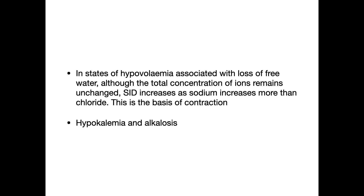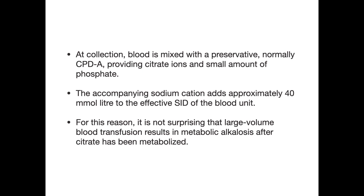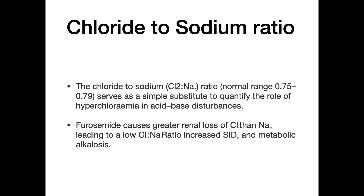Hypokalemia and alkalosis are also explained by this principle. Regarding blood transfusion, at collection blood is mixed with preservatives — usually citrate with small amounts of phosphate. The accompanying sodium cation adds approximately 40 mmol/L to the effective SID of the blood unit. Large-volume blood transfusion therefore results in alkalosis because citrate is metabolized by the body, leaving the sodium. The chloride-to-sodium ratio is a very important determinant of acid-base balance. Furosemide causes greater renal loss of chloride than sodium, leading to a low chloride-to-sodium ratio and increasing the SID — this is why furosemide use results in metabolic alkalosis.